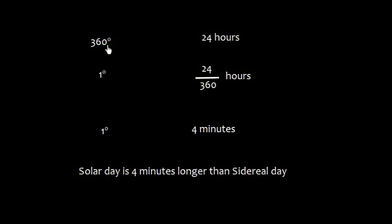So now let us understand this: that 360 degrees is 24 hours. 360 degrees of rotation is 24 hours, so 1 degree is 24 by 360 hours, and we can easily calculate that 24 by 360 into 60 minutes, because 1 hour of time is 60 minutes of time. So 1 degree is 4 minutes. And we know this solar day, where earth is rotating 361 degrees, and the sidereal day which is 360 degrees, so the solar day is 4 minutes longer than sidereal day.